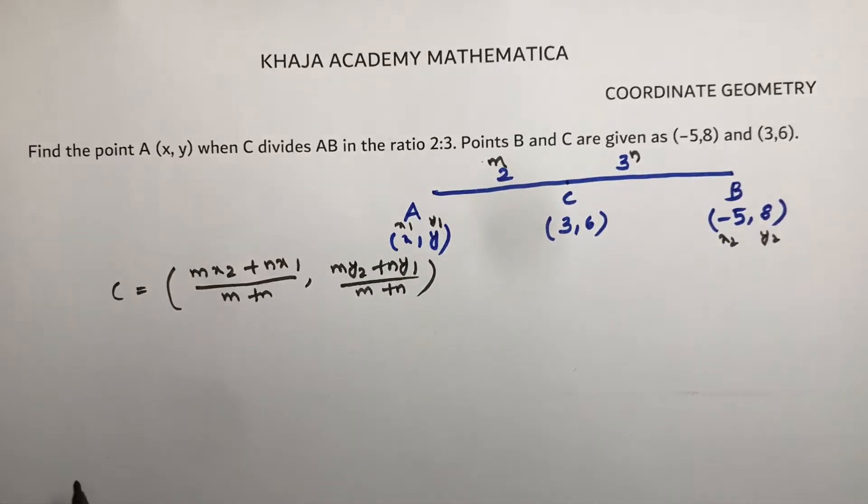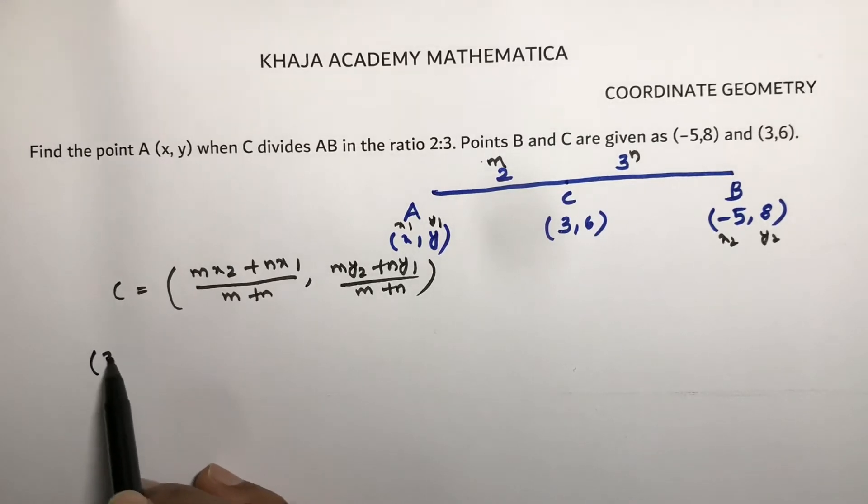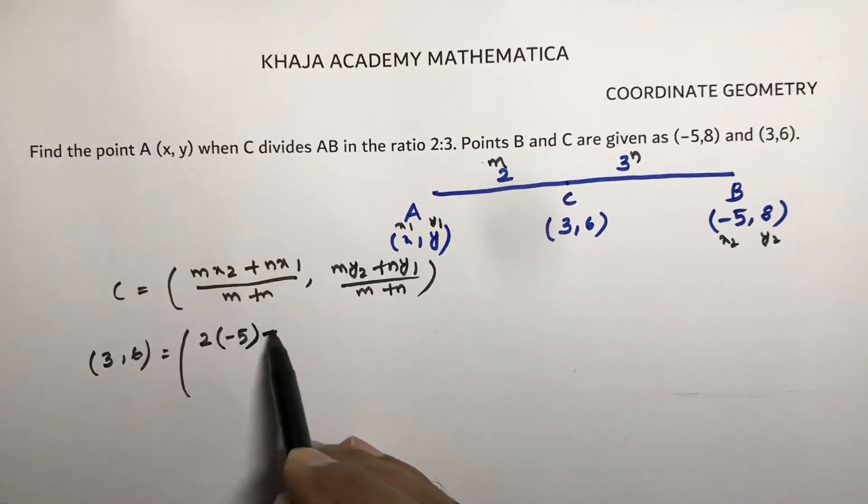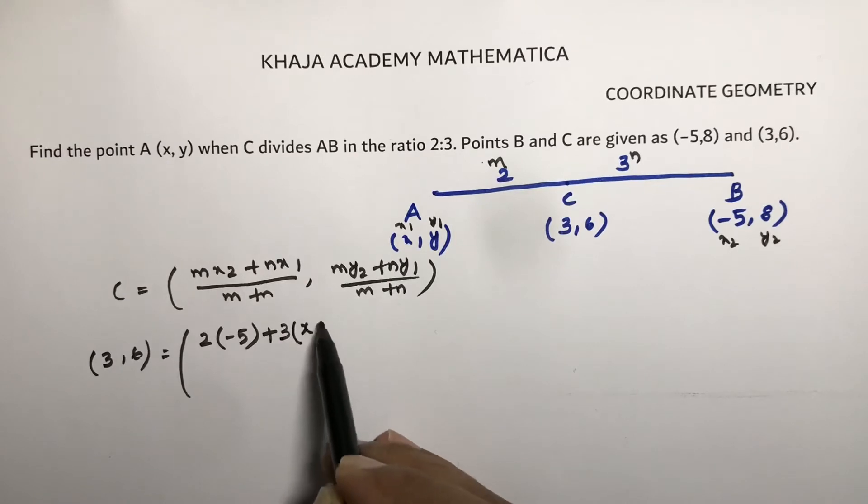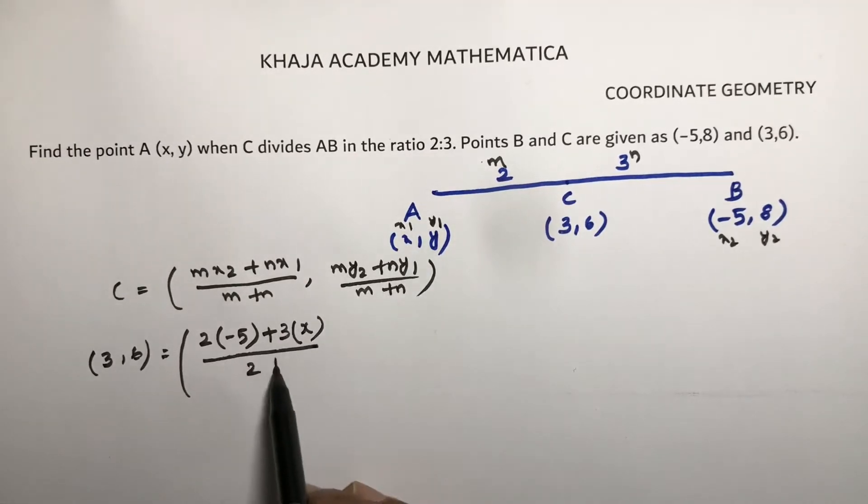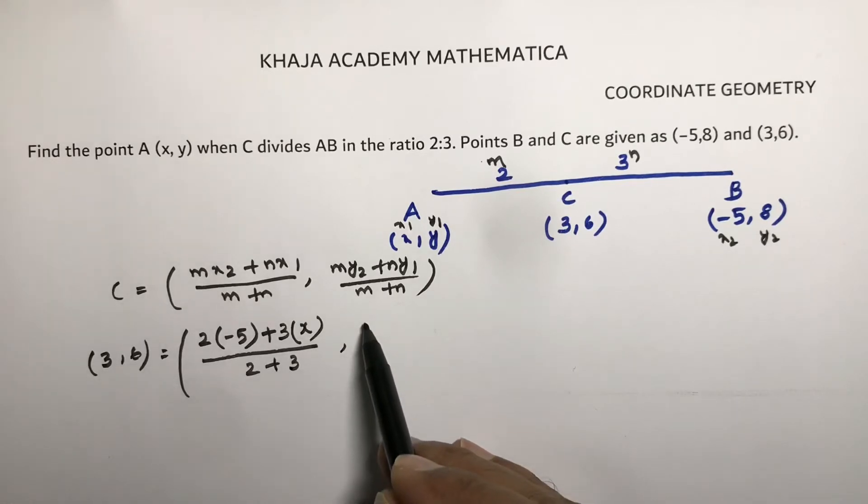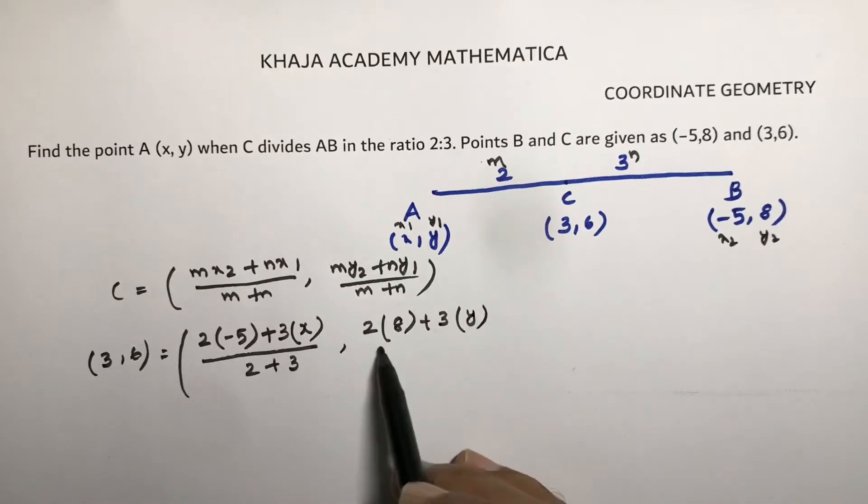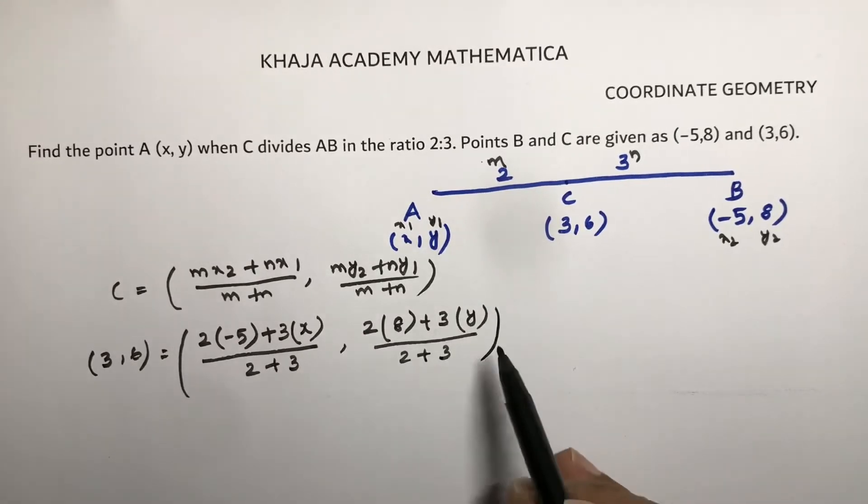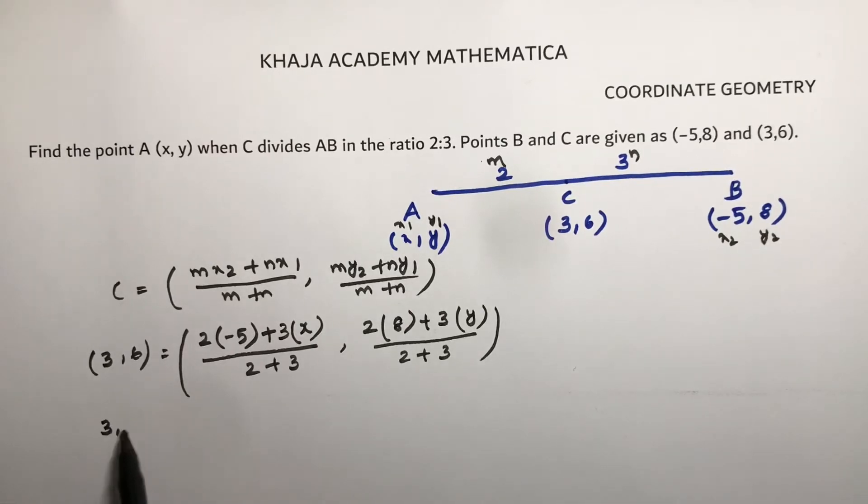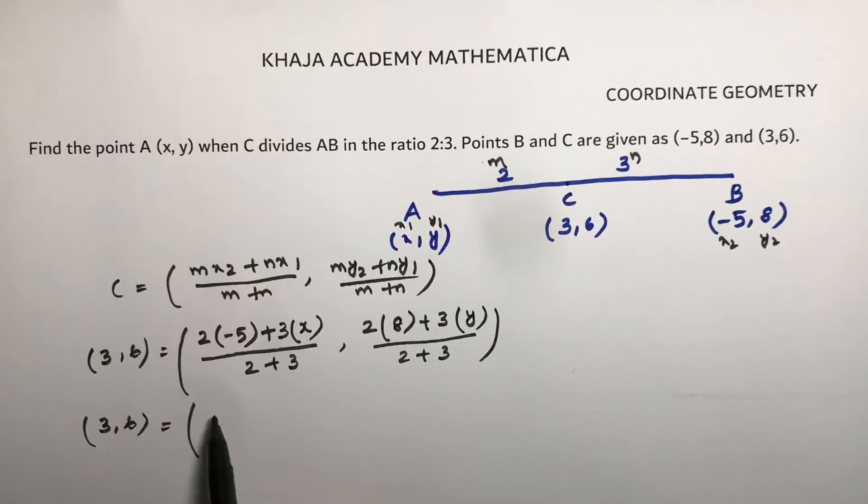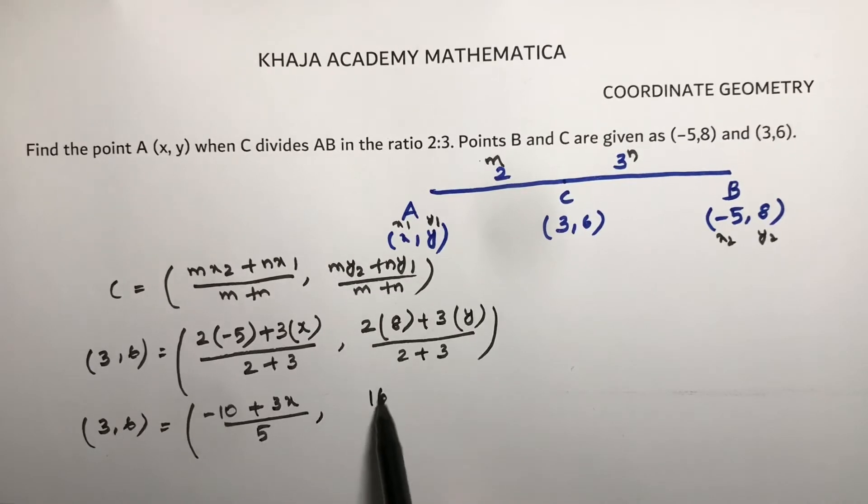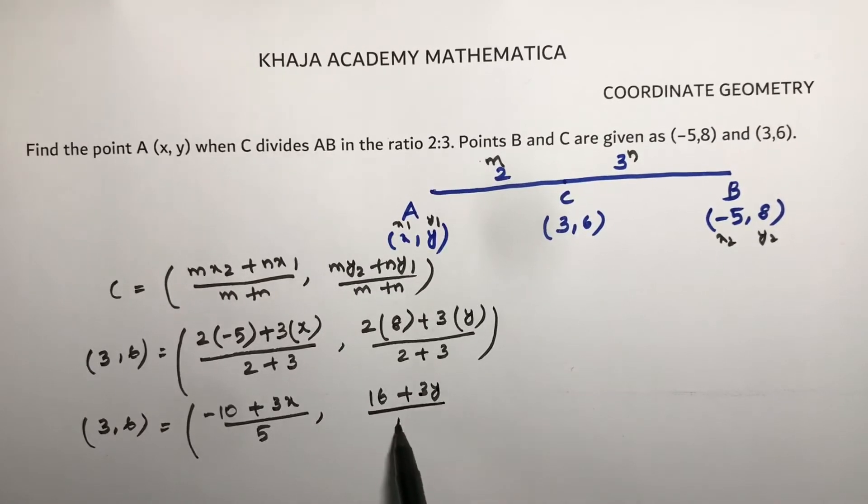So now if I write here, C value 3 comma 6 equals M X2 plus N X1 over M plus N, M Y2 plus N Y1 over M plus N. M is 2, X2 is minus 5, N is 3, X1 is X, Y2 is 8, Y1 is Y. M plus N is 5. So 3 comma 6 equals minus 10 plus 3X by 5, 16 plus 3Y by 5.